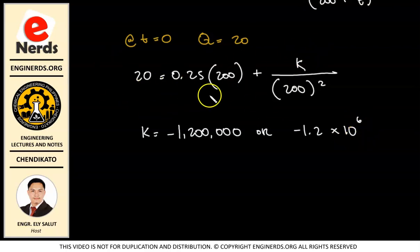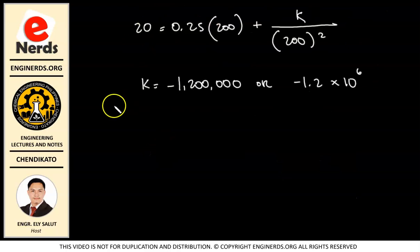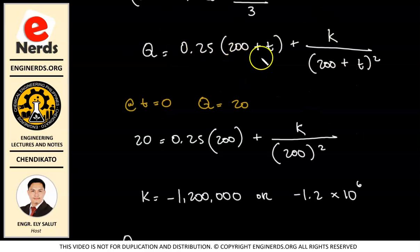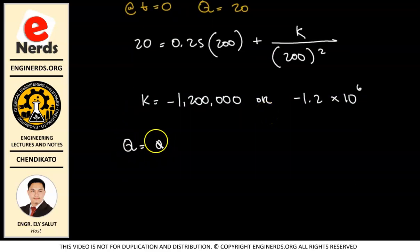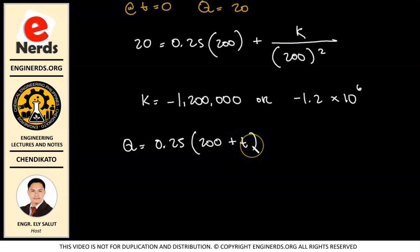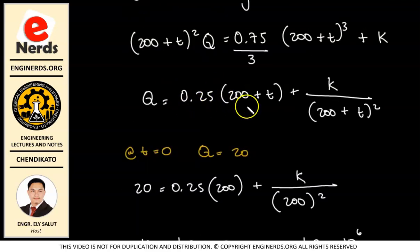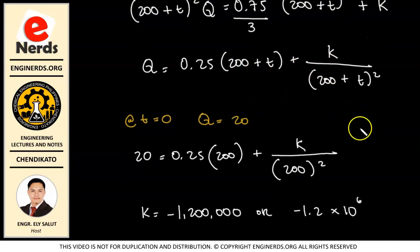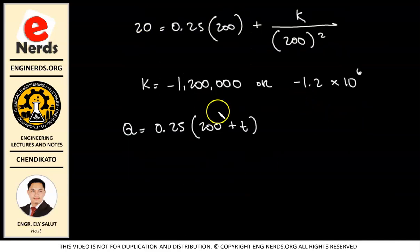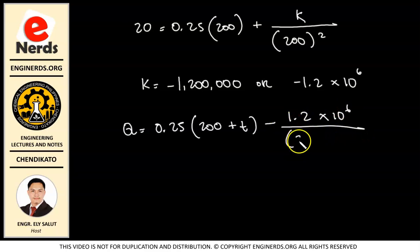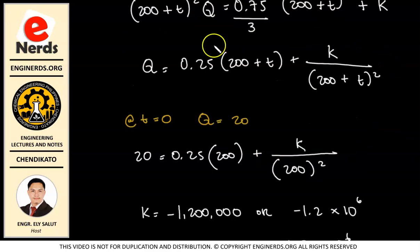Substituting K back into our equation: Q = 0.25(200+T) − 1.2×10⁶/(200+T)². This is our complete equation for the amount of salt Q at any given time T, with the constant K now replaced by its value.